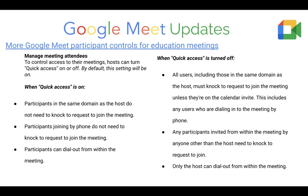Quick access is on by default. This allows anyone in our domain, palmbeachschools.org, to join the meeting without requesting access. When you turn quick access off, all users — including those in the same domain as the host — must request to join the meeting, unless they're on a calendar invite.